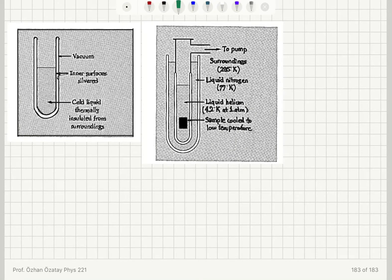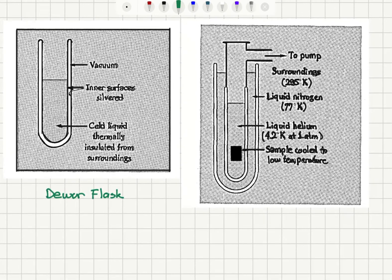The first design is called a Dewar flask. So this is how we store what we call cryogens. So the Dewar flask consists of a jacket which is under vacuum. The inner surfaces are silvered. So this vacuum is going to act as our thermal insulator.